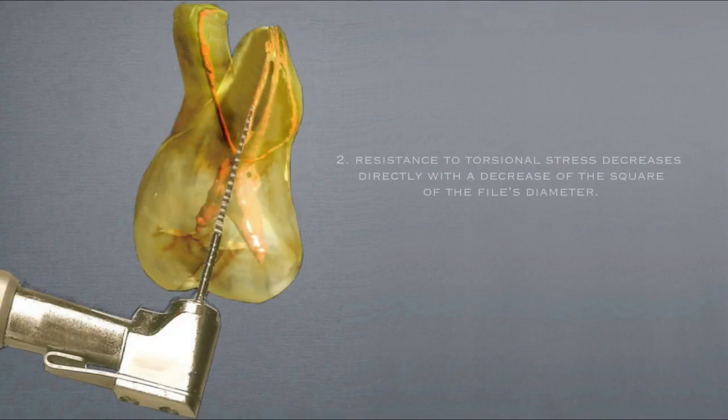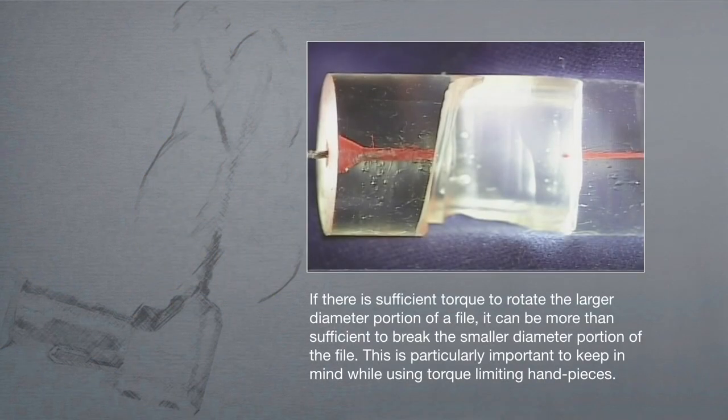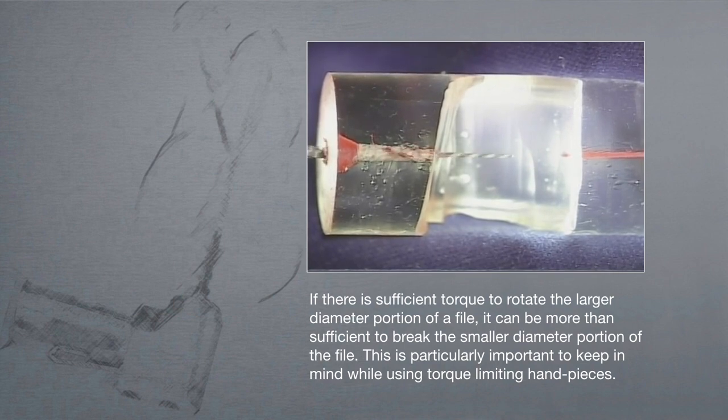The second file anatomy relationship states, resistance to torsional stress decreases directly with a decrease of the square of the file's diameter. If there's sufficient torque to rotate the larger diameter portion of a file, it can be more than sufficient to break the smaller diameter portion of the file.